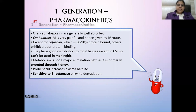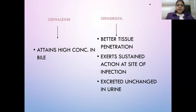Probenecid increases the plasma half-life. Cephalexin is highly concentrated in bile and is excreted in the bile. Cephalexin has better tissue penetration, exerts sustained action at the site of action, and is excreted unchanged in urine.